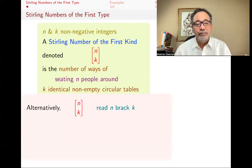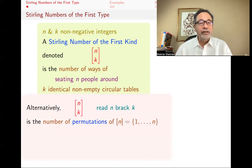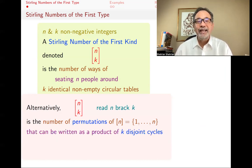Alternatively, again, this [n,k] is the number, and this is sort of the formal definition of it, is the number of permutations of 1 through n that can be written as a product of k disjoint cycles. So if you were a group theorist, this is the way you would think about it: how many permutations of n, how many elements of the group S_n, the symmetric group on n letters, are written as a product of k disjoint cycles. When we say k disjoint cycles, we include 1-cycles as well.